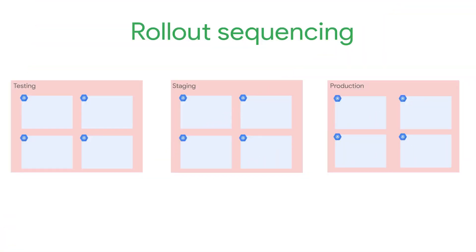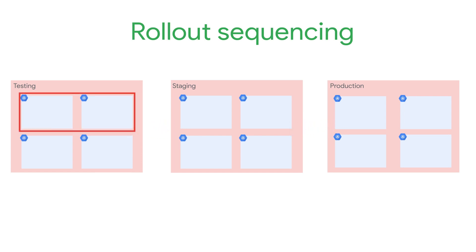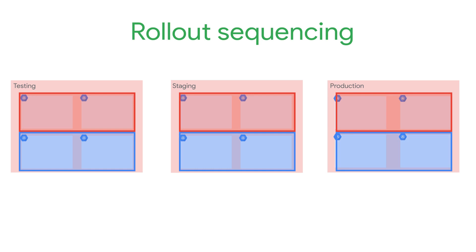With rollout sequencing, you can sequence an upgrade between fleets. Or if you've further grouped your clusters into scopes, then you can sequence an upgrade between scopes. Let's look at how this works with some examples.